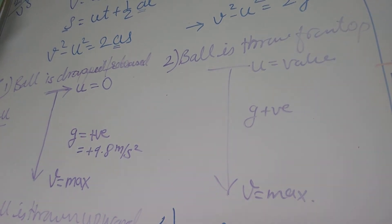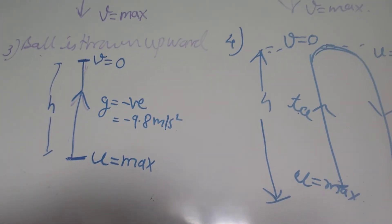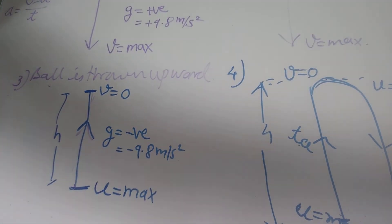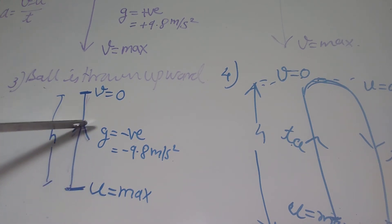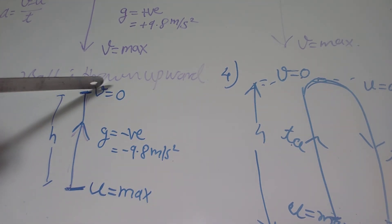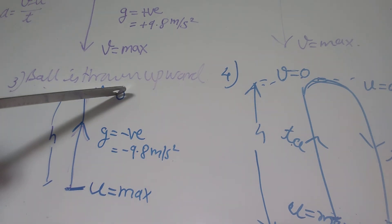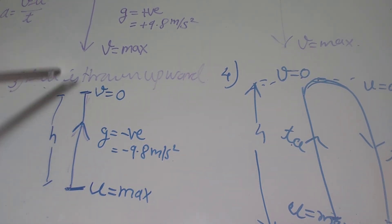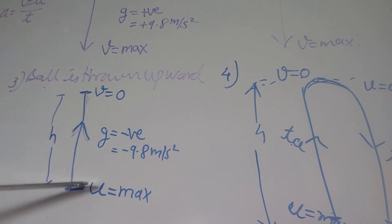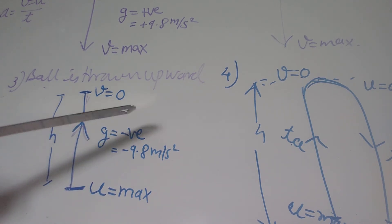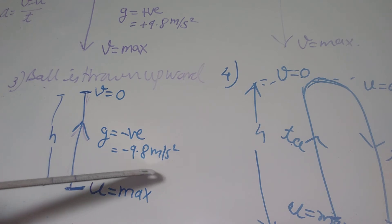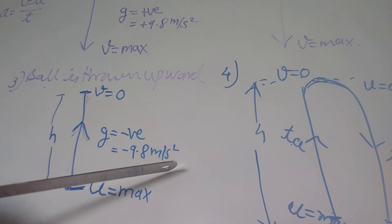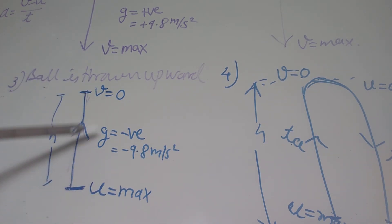The third situation is that a ball is thrown vertically upward. When any object is thrown vertically upward, some velocity is given to it, which will be the maximum velocity. Going upward means velocity keeps decreasing, and when the object reaches maximum height, the velocity becomes zero. Since final velocity is less than initial velocity, g is negative here — you take the value as minus 9.8 m/s², or minus 10 m/s² if that value is provided — because it is upward motion and velocity decreases.